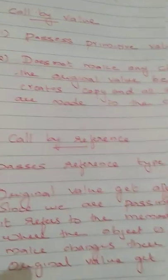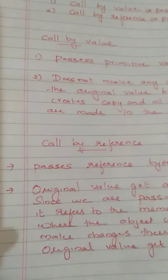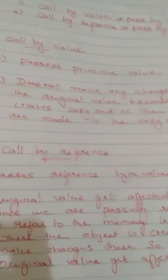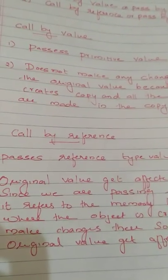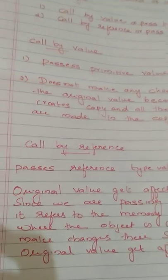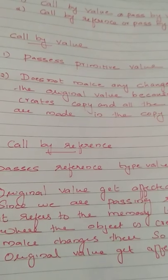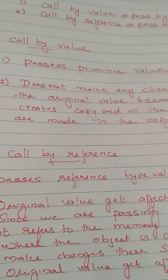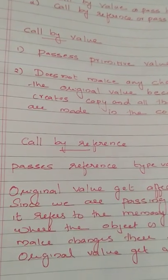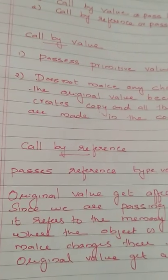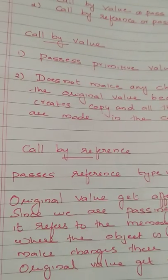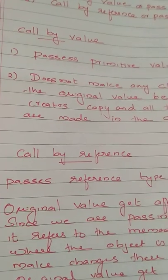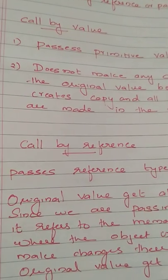In call by reference, since we are passing a reference type value, it will automatically move to the memory location where the object is created and make changes in that memory location. So the original value will get affected or changed in call by reference, as we are referring to the address of the value. It will go directly to the memory location and make changes there, so the original value will get affected.